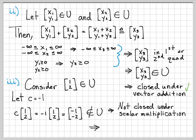Since the scalar multiplication property failed, U cannot be a subspace of R². To summarize: we had the set U as a subset of R², we checked the three subspace properties — the first two (zero vector and vector addition) checked out, but the third one (scalar multiplication) failed. If any of the three properties fail, the set cannot be a subspace of the vector space we're working with.